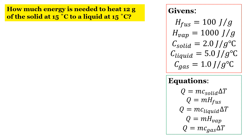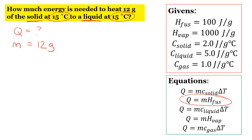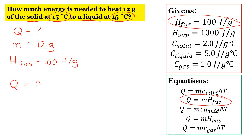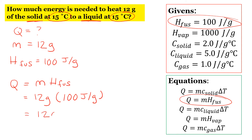The next question asks: how much energy is needed to heat 12 grams of the solid at 15 degrees Celsius to a liquid at 15 degrees Celsius? Notice the temperature is not changing — we're still at 15 degrees Celsius — so that indicates a plateau on the graph. It's also telling us we're going from solid to liquid. Any time we go from solid to liquid or liquid to solid, we use the equation for the heat of fusion. The mass is 12 grams, and the heat of fusion is 100 joules over grams. Multiplying those gives us 1,200 joules.